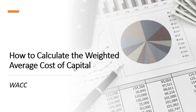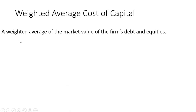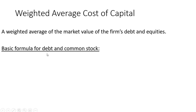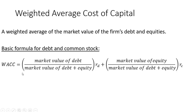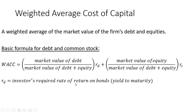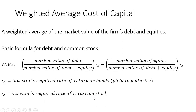How to calculate the weighted average cost of capital. The weighted average cost of capital is the weighted average of the market value of the firm's debt and equity. The basic formula for debt and common stock: WACC equals the market value of debt divided by the market value of debt plus equity, multiplied by r_d, the investor's required rate of return on bonds or yield to maturity, plus the market value of equity divided by the market value of debt plus equity, multiplied by r_c, the investor's required rate of return on common stock.